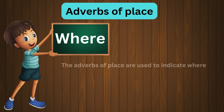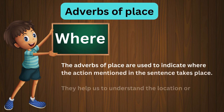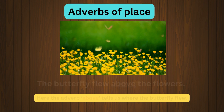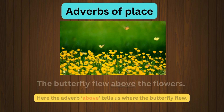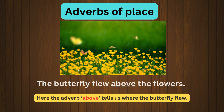Next we see adverbs of place. Adverbs of place are used to indicate where the action mentioned in the sentence takes place. They help us to understand the location or position of an event or object. For example: The butterfly flew above the flowers. Here the adverb 'above' tells us where the butterfly flew.